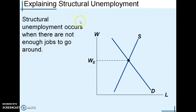Looking at structural unemployment, this is the other cause of the natural rate of unemployment. The natural rate is frictional unemployment plus structural unemployment. Structural unemployment is due to the structure of the labor market.